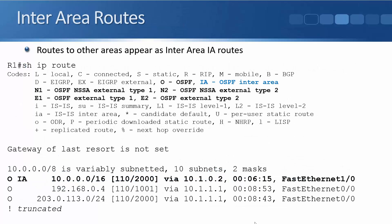Looking at the routing table, inter-area routes — routes learned from an ABR in another area — show up as type 'O IA' for inter-area. In the example output, the bottom two destinations are intra-area routes within the same area as the router, while the top entry is an inter-area route from another area. Inter-area routes are always learned from an ABR, which is the border between areas and where summarization is performed.